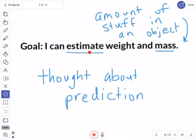Let's start by reading the goal. I can estimate weight and mass. Remember, an estimate is a thought about prediction. It's not just a guess, it's more than that because you really are trying to think about it before you make that guess. I really like to call it more of a prediction.